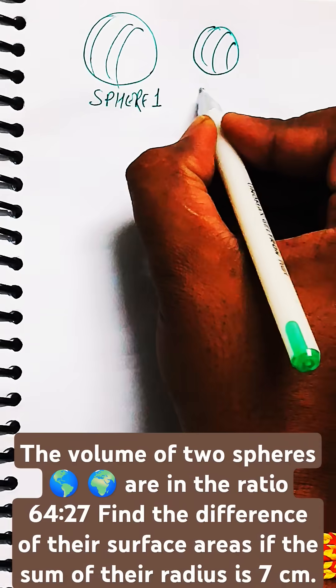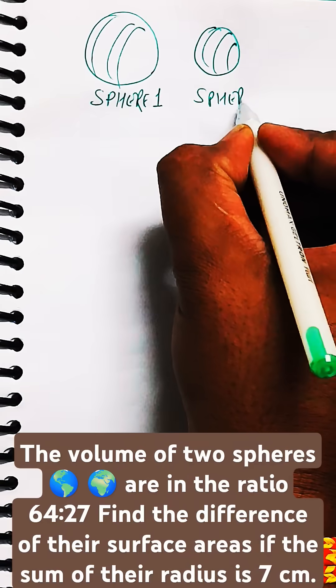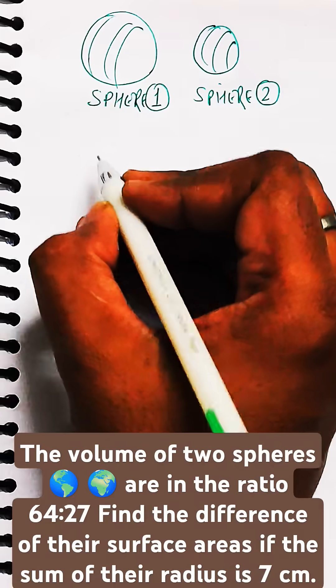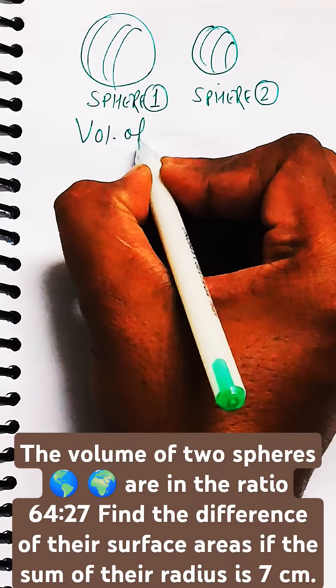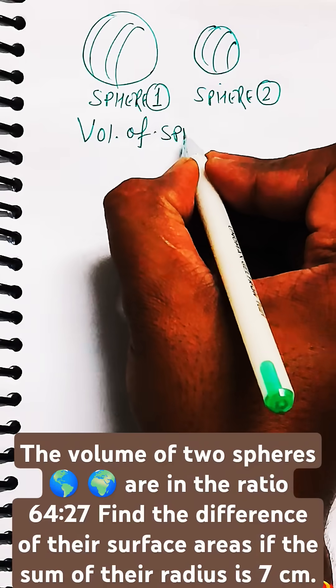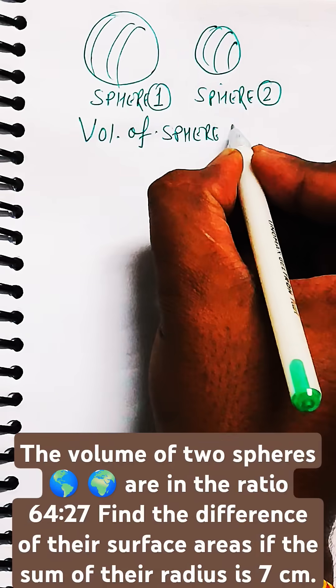This is sphere one and this is sphere two. It's given in the question that the ratio of the volume of the two spheres is 64:27. That is the volume of sphere one.